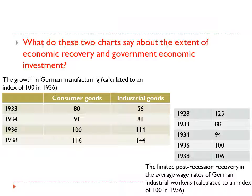Looking at two charts: what do they say about the extent of economic recovery and government economic investment? The first chart in the upper left looks at the growth in German manufacturing, with an index of 100 set at 1936 as the baseline, showing which years were above or below. The second graph looks at the average wage rates of industrial workers.